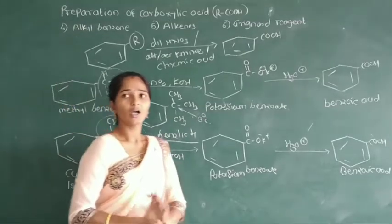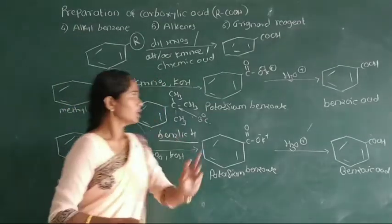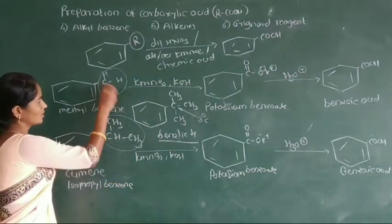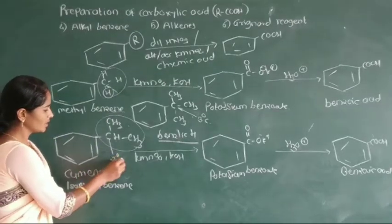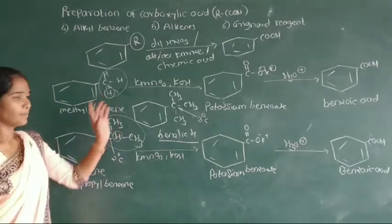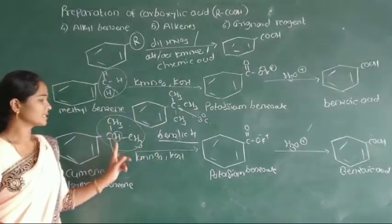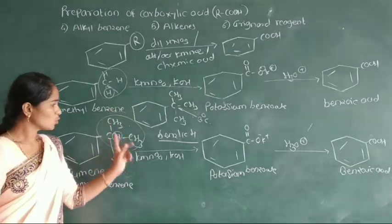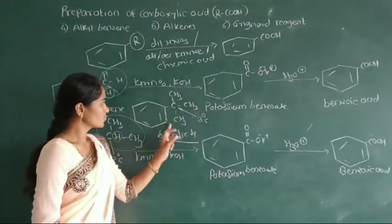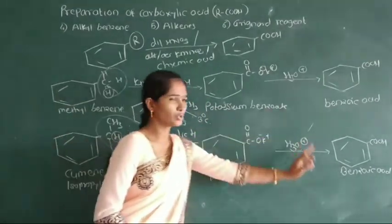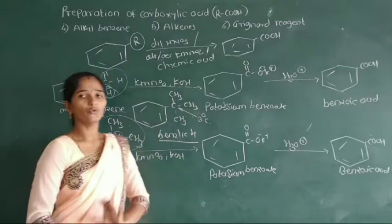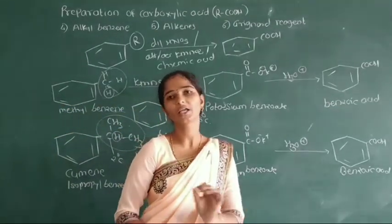Because in the tertiary alkyl group there is an absence of benzylic hydrogen. In primary and secondary alkyl groups, there is a presence of benzylic hydrogen. Therefore, these two alkyl groups — primary and secondary — are oxidized into the carboxyl group. But the tertiary alkyl group is not oxidized into the carboxyl group because oxidation requires benzylic hydrogen. This is the fourth method for preparation of carboxylic acid from alkyl benzene.